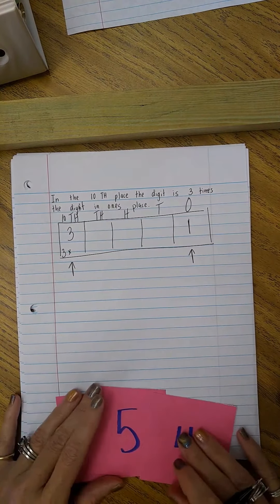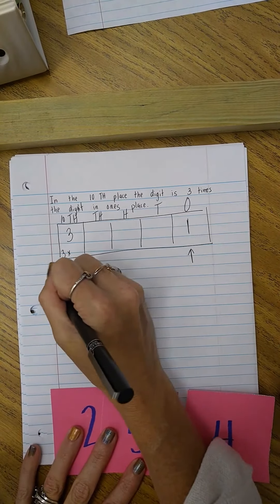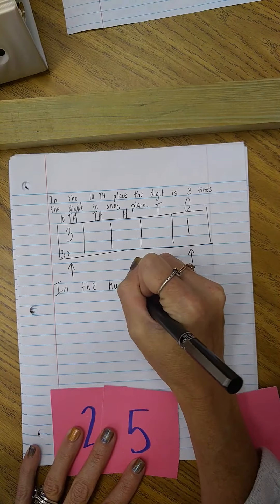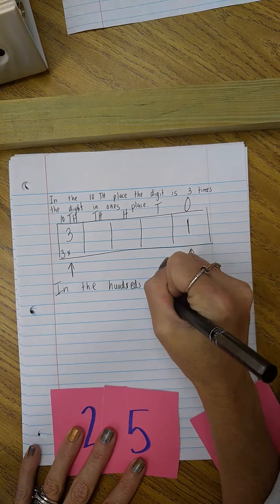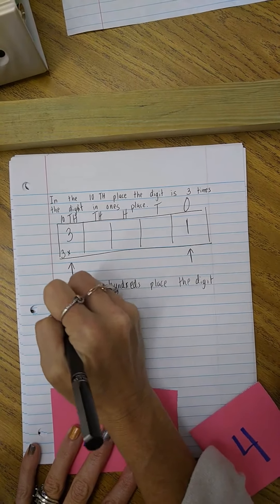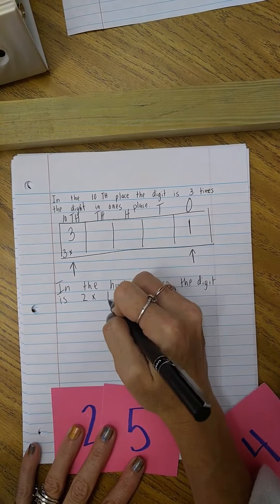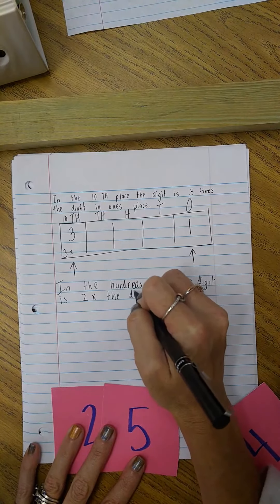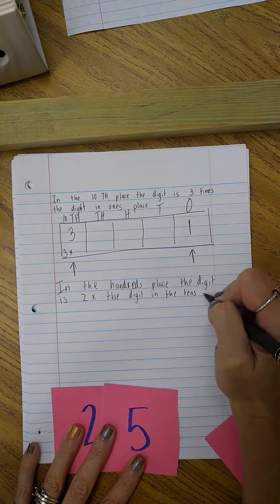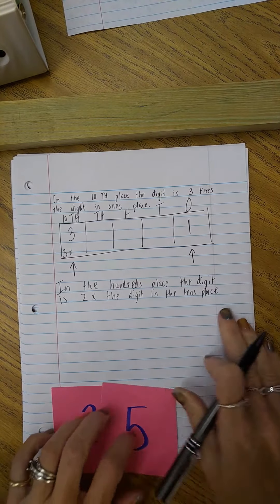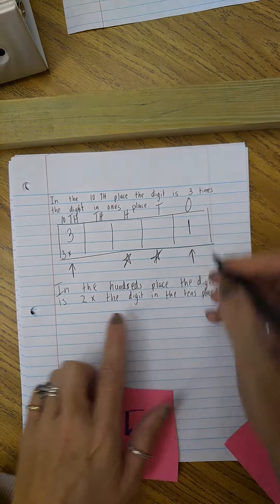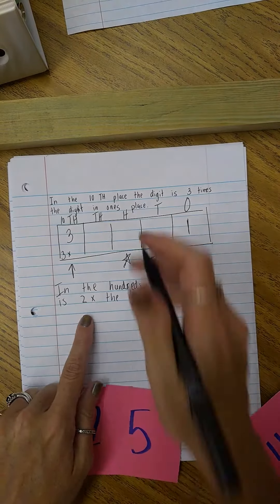The next rule may be that in the hundreds place, the digit is two times the digit in the tens place. So I'm looking at which place values: it said hundreds and it said tens, and it said the one in the hundreds is two times.